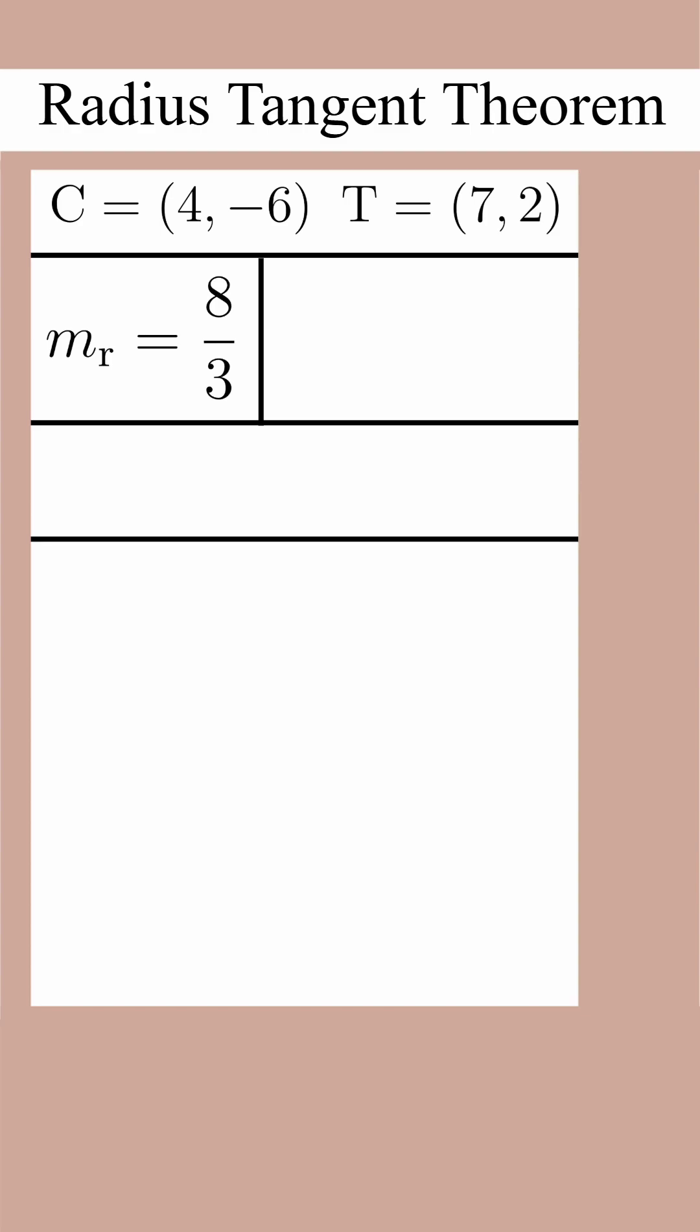As we said before, the slope of the radius and the slope of the tangent line are opposite reciprocals. This means the slope of the tangent line is negative 3/8.